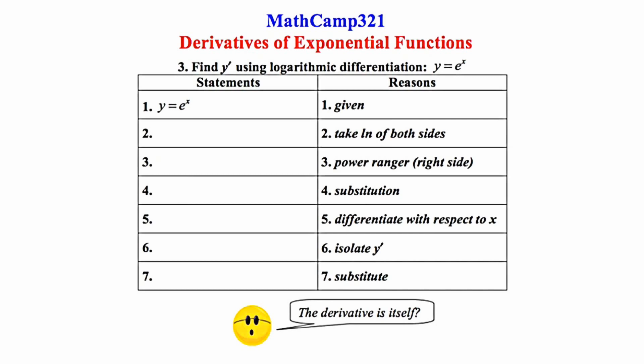If you get your packet out and turn to the page that has number 3 on it, we're going to do a derivation of the derivative itself, and it's set up like a two-column proof from geometry, which is good, because the reasons are going to guide us through each step.